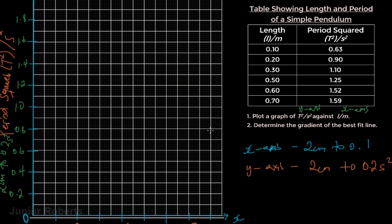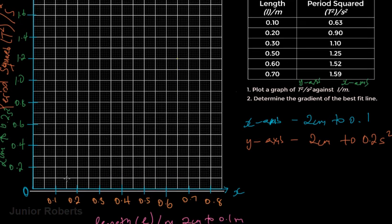Now that both axes are drawn up with our scales, we can begin to plot our data. We look at a value for length and find its corresponding value for period squared. At 0.1 meters, the period squared is 0.63 seconds squared. We go to 0.1 on the x-axis, then find 0.63 on the y-axis.